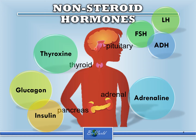The pituitary gland secretes many hormones. I only name three here: FSH, the follicle stimulating hormone; LH, the luteinizing hormone; and ADH, the antidiuretic hormone. So these hormones are also non-steroid hormones.